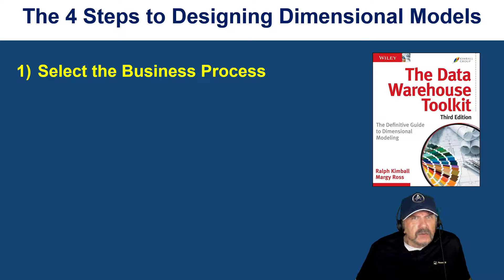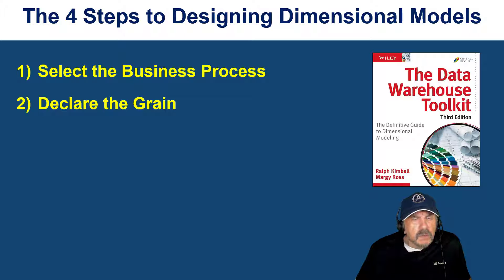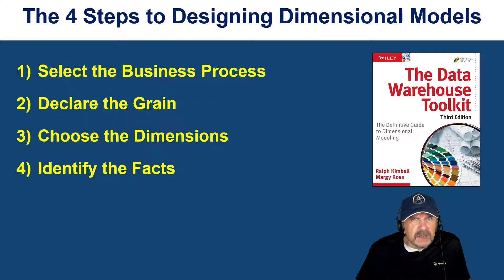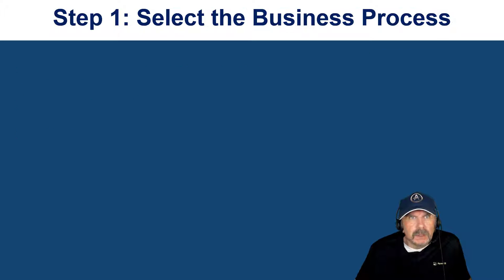The first step is select the business process. Then we declare the grain, choose the dimensions, and finally identify the facts. These are very high-level steps, so let's jump into what they mean.